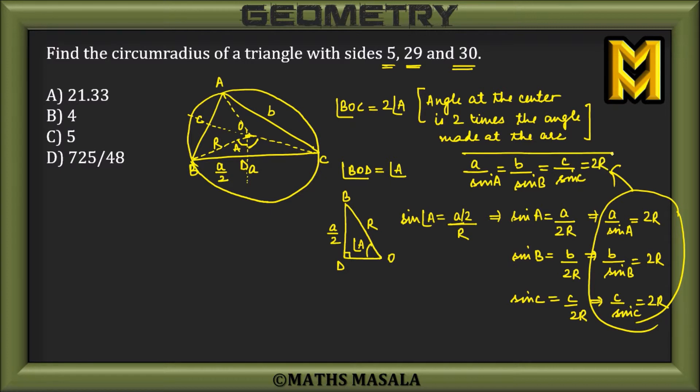This is called the sine law of a triangle, which states that the ratio of side and sine of opposite angle in a triangle is always equal, which is equal to 2R—2 times the circumradius.